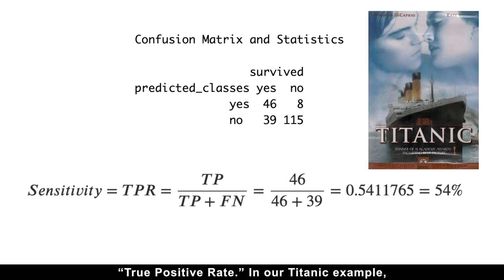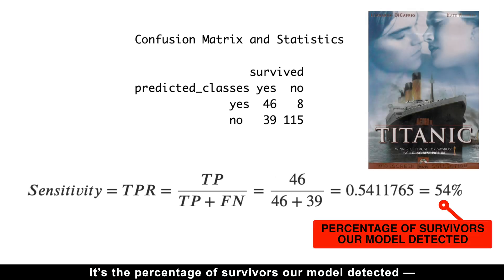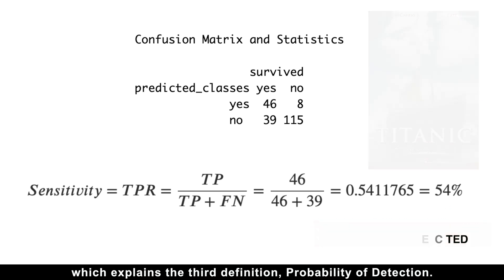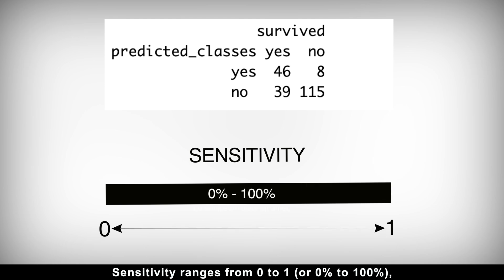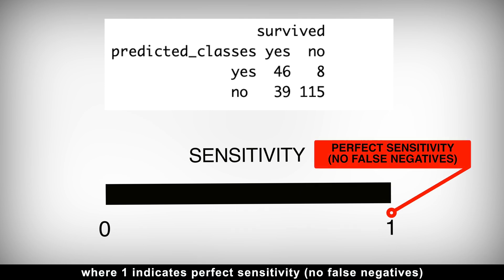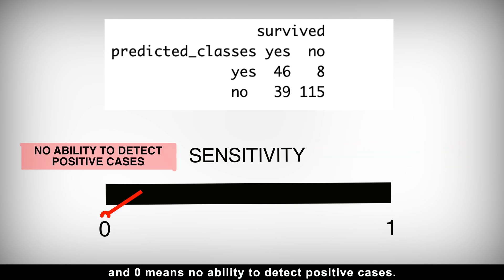In our Titanic example, it's the percentage of survivors our model detected, which explains the third definition, probability of detection. Sensitivity ranges from 0 to 1, or 0% to 100%, where 1 indicates perfect sensitivity, or no false negatives, and 0 means no ability to detect positive cases.